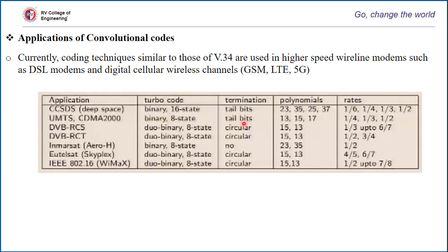These additional termination bits are called tail bits, and termination is achieved either by tailing or circular methods. In cases where circular termination is used, they employ what are known as tail-biting encoders, where the starting and ending states are the same, creating a circular trellis that requires no termination bits. These represent the various applications and standards that use modern convolution coding techniques.